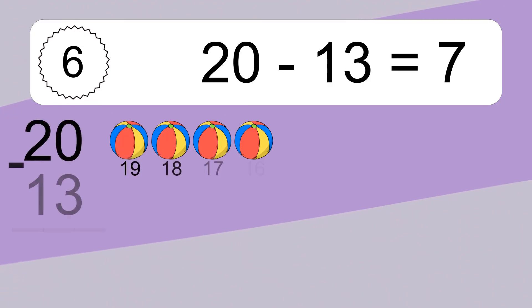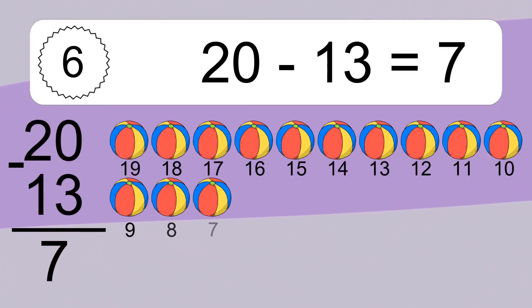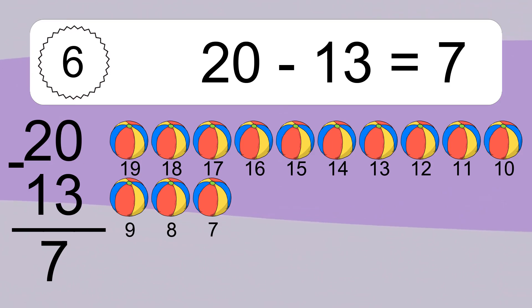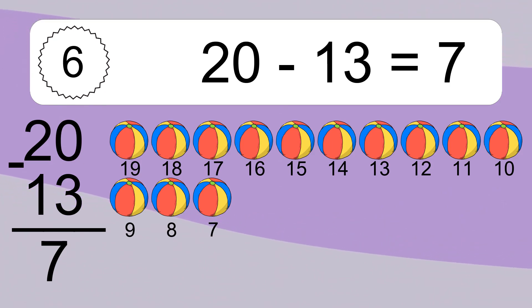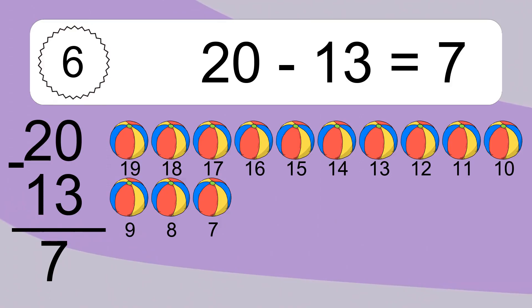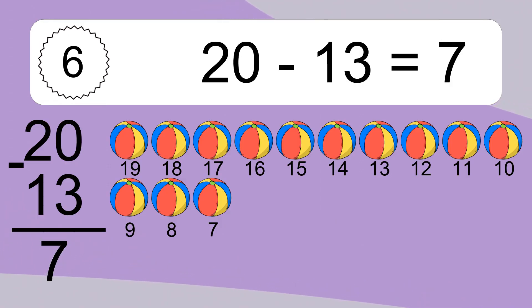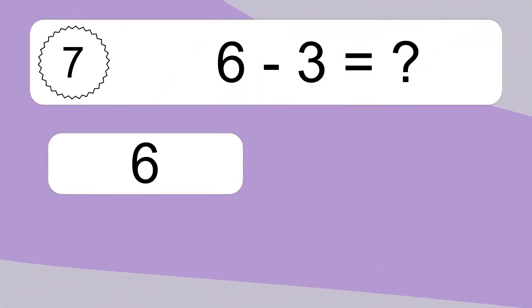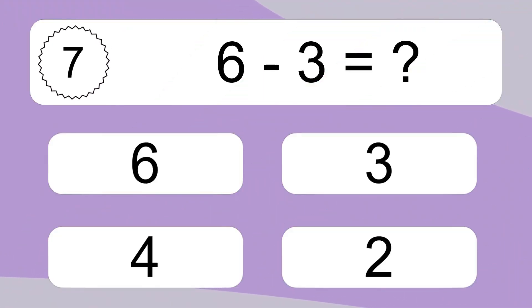20 minus 13 equals what? 20 minus 13 equals 7. Let's count it. 19, 18, 17, 16, 15, 14, 13, 12, 11, 10, 9, 8, 7.